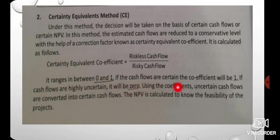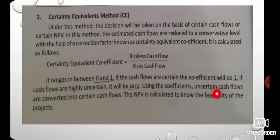If the cash flows are certain, the coefficient will be 1. If the cash flows are uncertain or highly uncertain, the coefficient will be less than 1. Using the coefficient, uncertain cash flows are converted into certain cash flows, and the NPV is calculated to know the feasibility of the project.